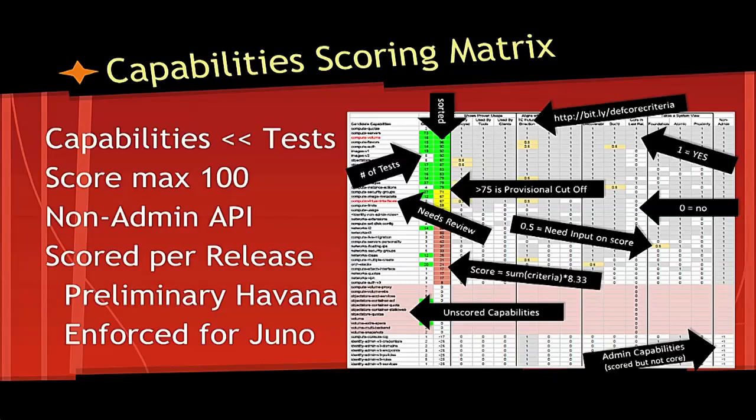This picture is a cheat sheet — this is the first time we did the scoring matrix, so it's a bit user-unfriendly. You can Google 'DefCore cheat sheet' to find this matrix. Capabilities were boiled down into test groups, and test groups were scored on these 12 criteria. We did a histogram of the scoring that broke into three strong group categories: the must-pass category, the maybe category, and the 'we don't think so' category — a nice W-shaped histogram if you like statistics. Please review this.